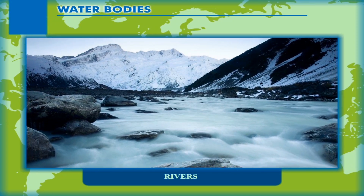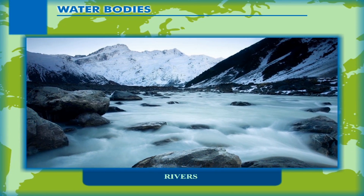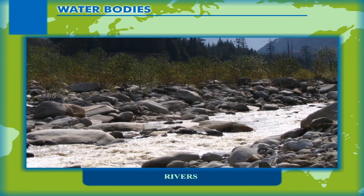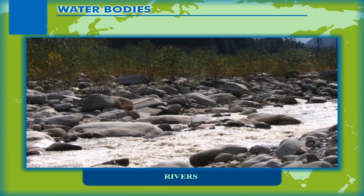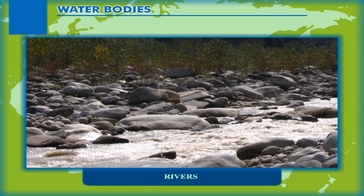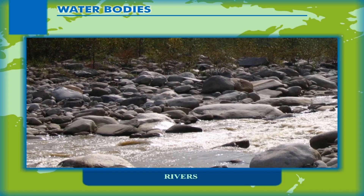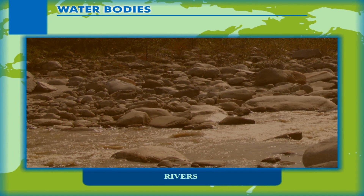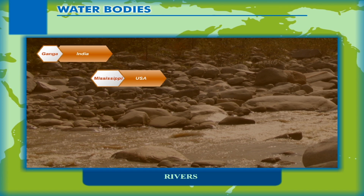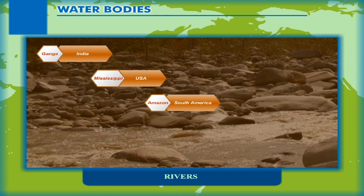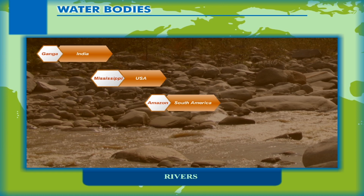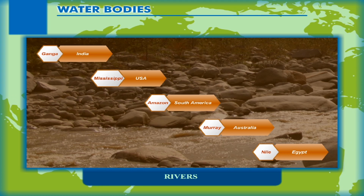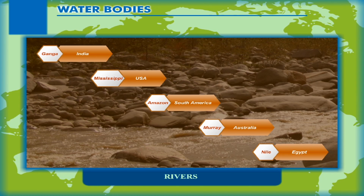Rivers: A river refers to a large natural stream of water flowing in a definite direction in a channel. Rivers flow towards a sea, ocean, main river, or a lake. Depending on the supply of water, rivers may be perennial, that is flowing all through the year, or seasonal, which usually flow during the rainy season. River Ganga (India), River Mississippi (USA), River Amazon (South America), River Murray (Australia), and River Nile (Egypt) are some of the important rivers in the world.